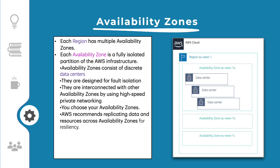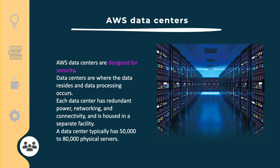You are responsible for selecting the availability zone where your systems will operate. Systems can span multiple availability zones. AWS recommends replicating data across multiple availability zones for data resilience. You should design your system to survive temporary failure of an availability zone or a disaster if it occurs.